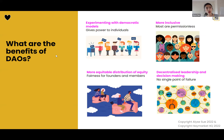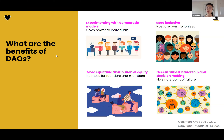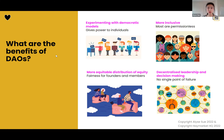The benefits of DAOs include experimenting with different democratic models by giving power to individuals to vote. They're also more inclusive — many DAOs are permissionless, so anyone can join just by buying a token, which allows you to see DAO activities and vote on operations. There's also more equitable distribution of equity — fairness for founders and members. Traditionally you might have a 70-30 founder split, but it might be flipped in a DAO. And there's decentralized leadership — no single point of failure.